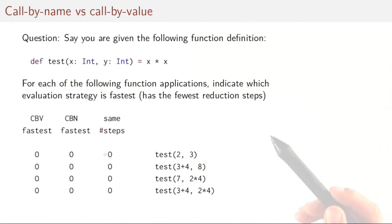Here's a question. Say you're given the following function definition. Def test of x and y equals x times x. For each of the following function applications, indicate which evaluation strategy is fastest, by which we mean has the fewest reduction steps. That's first test of two three, then test of three plus four eight, test seven two times four. And finally, test three plus four, two times four.